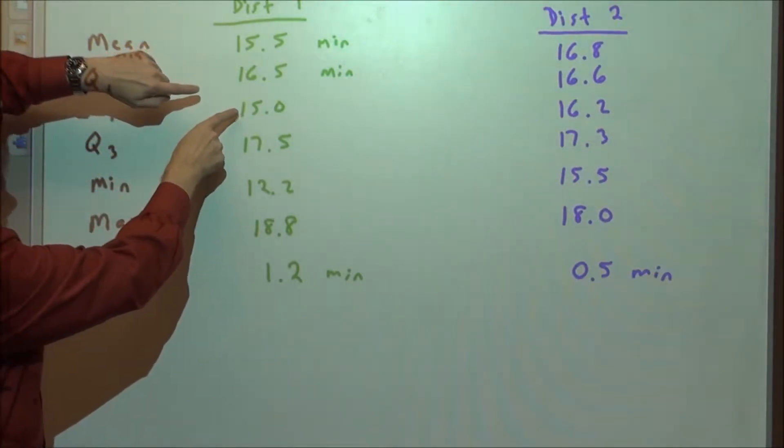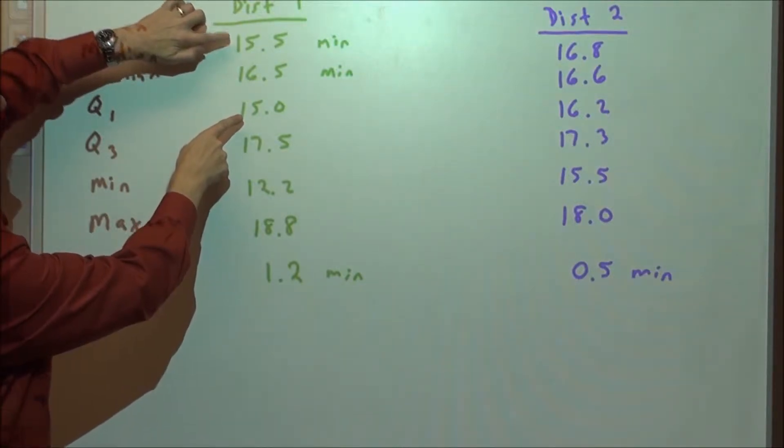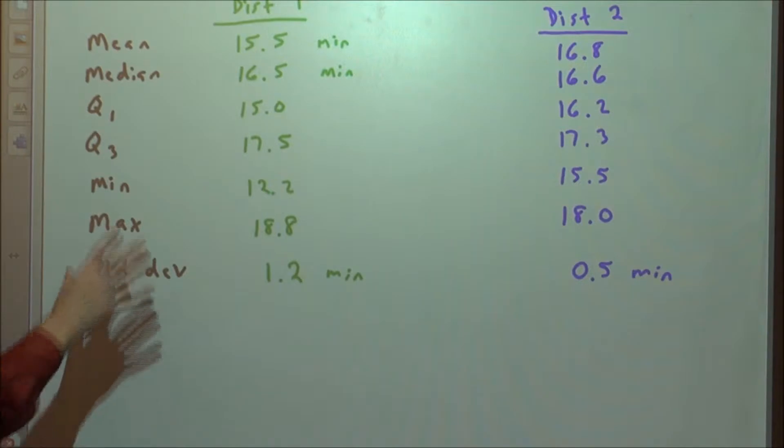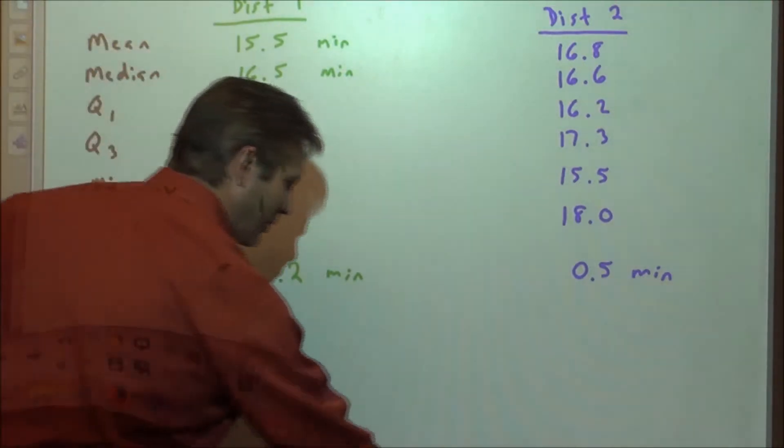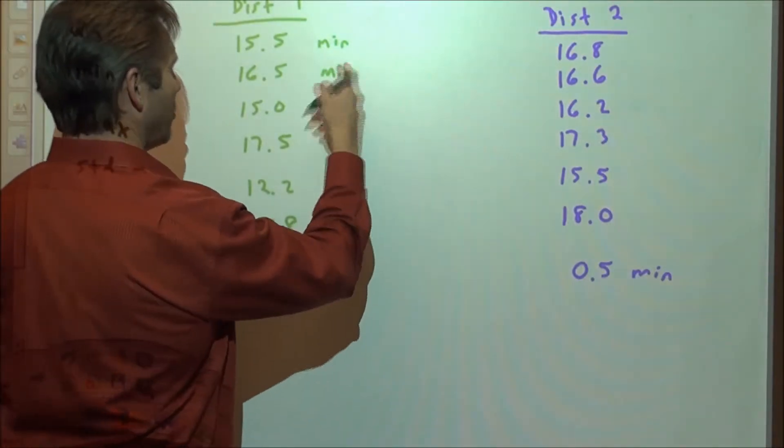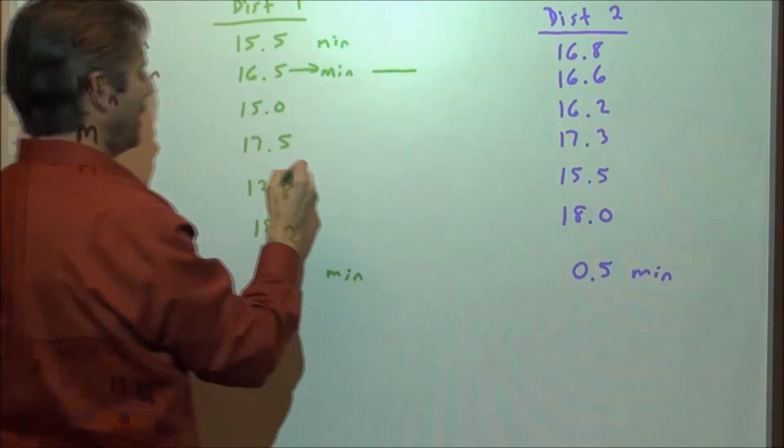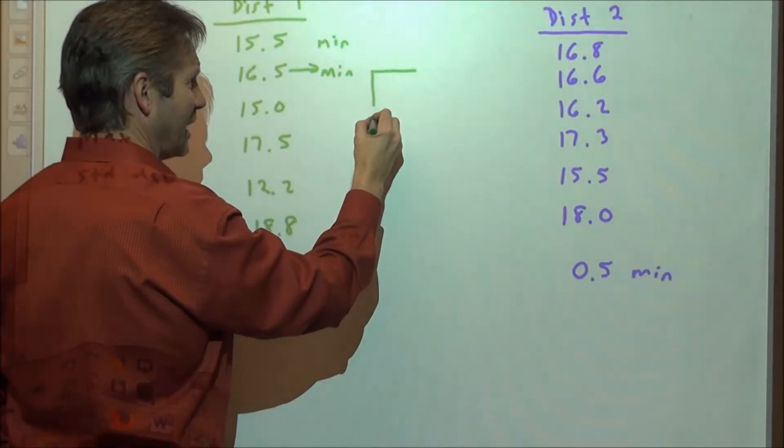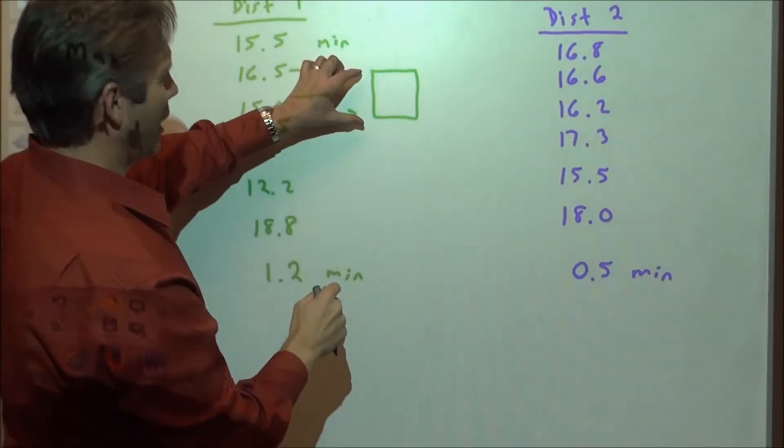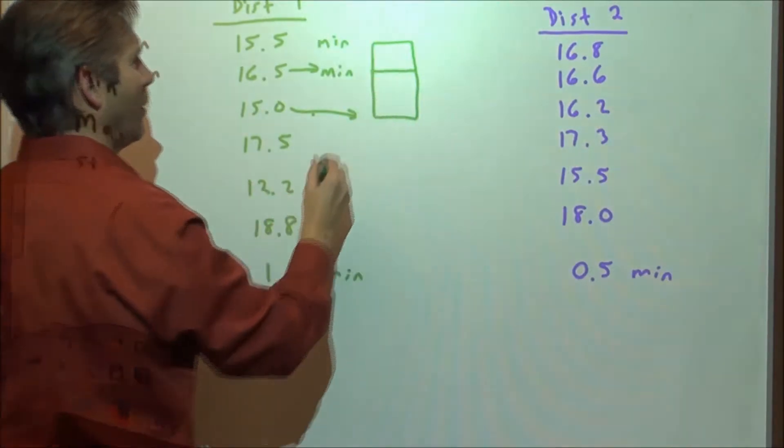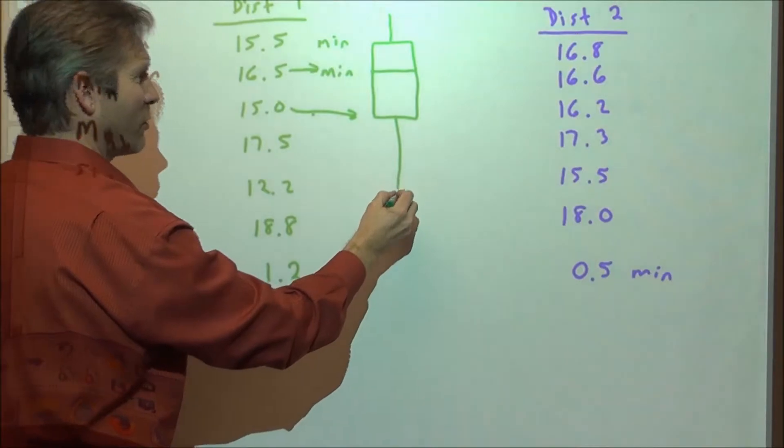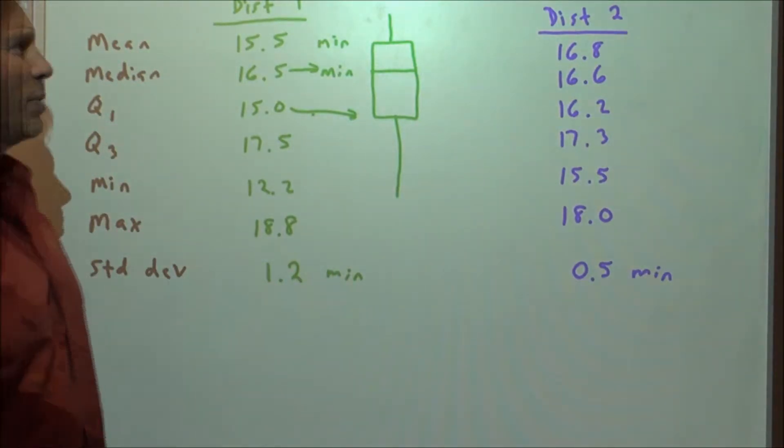Since the first quartile is way down at 15 and our mean is at 15.5, it's closer to the lower quartile than it is even to the median of the distribution. So we would conclude that this is skewed left. The other thing we could do is take this distribution and make a box plot. The median would be at 16.5 minutes. The lower quartile is at 15 minutes, the upper quartile is 17.5. This gap is one and a half minutes, this gap only one minute. The max is at 18.8, the min is down at 12.2, twice as long.